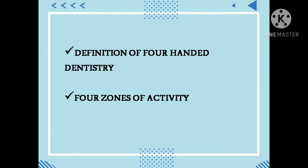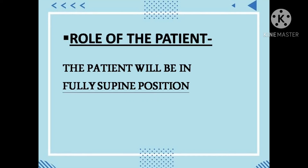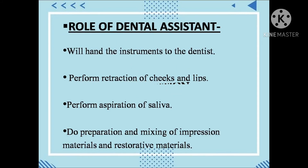Now let us look at the roles of the dentist, dental assistant, and patient in four-handed dentistry. The patient's role is to lie in a fully supine position. The dental assistant plays a key role: handing instruments and burrs to the dentist and performing retraction of the cheeks and lips of the patient.